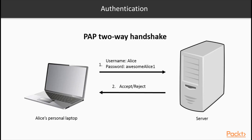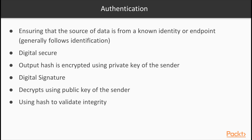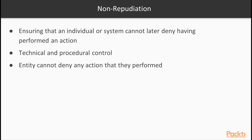Authentication protections validate that who is sending or receiving the data is who he or she says they are. You can enable authentication protections in a number of manners. One of those methods is through using a digital signature. Extending our integrity discussion, the output hash is then encrypted using the private key of the sender — this is known as a digital signature. For verification, the receiver then decrypts the hash string using the public key of the sender and recalculates the hash to validate integrity. Non-repudiation is another security service. Non-repudiation requires both technical and procedural controls and can result in an entity not being able to later deny an action that entity performed.